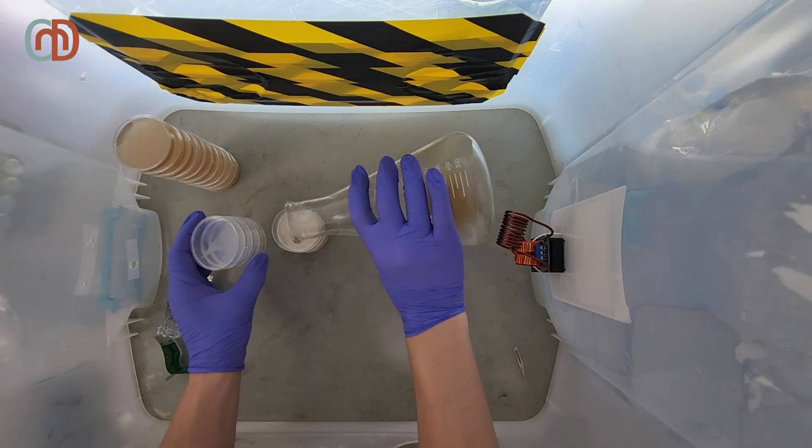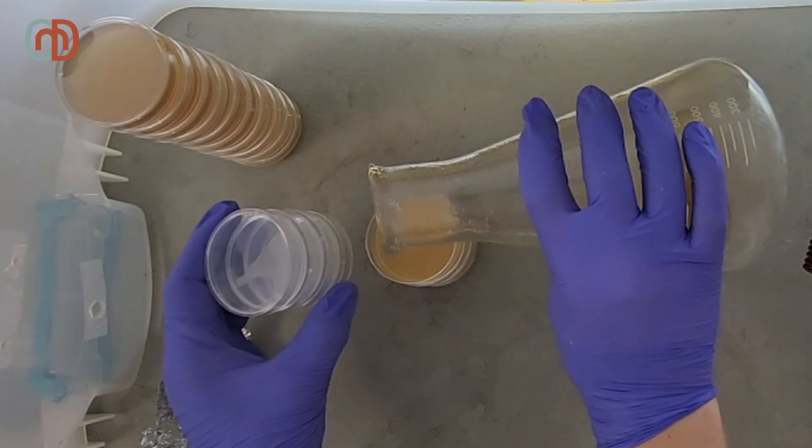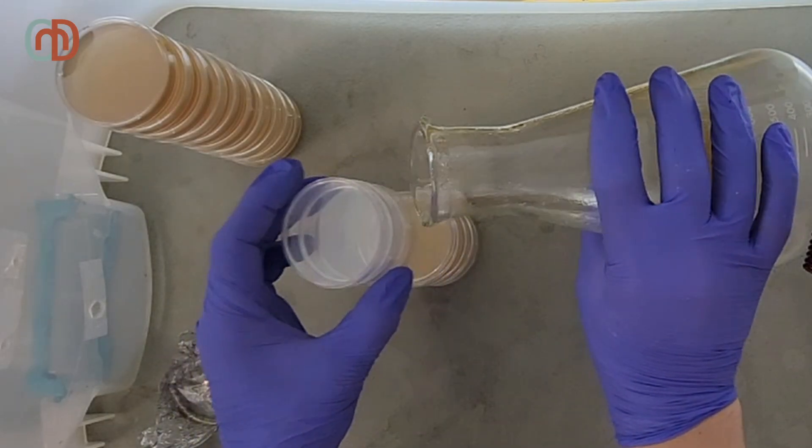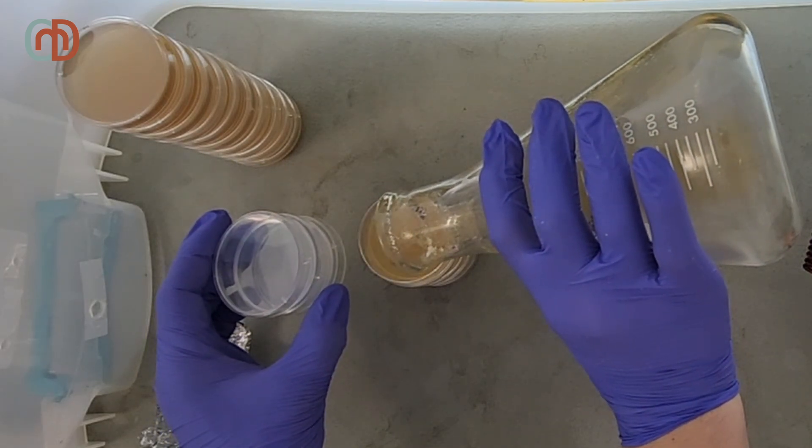I also took some of the extra agar that I pressure cooked and made some petri dishes because we'll be needing those. I did all of this work in my still air box, and if you don't know what that is, check out my video explaining them.